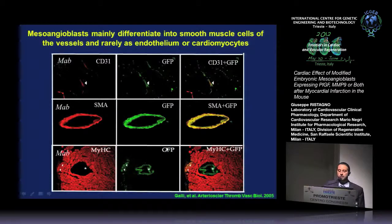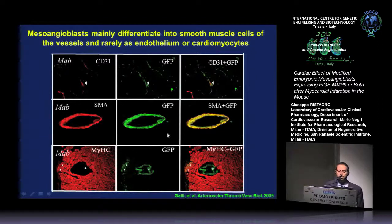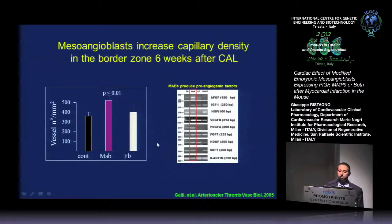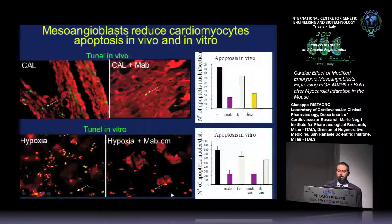However, when heart sections were stained to trace the mesangioblasts, it was found that only a few differentiated into endothelial cells or myocardial myocytes. The majority differentiated into smooth muscle cells, as you can see with co-staining for smooth muscle actin and GFP. Even in a model of myocardial ischemia reperfusion, we found some GFP-positive cells, but they were very rare. So mesangioblasts seem to act through other mechanisms, such as improvement in neovascularization, producing several pro-angiogenic factors, and also having anti-apoptotic action both in vivo and in vitro.